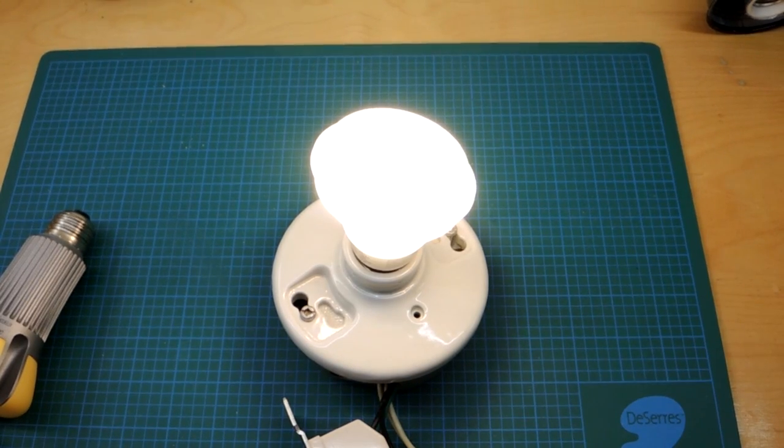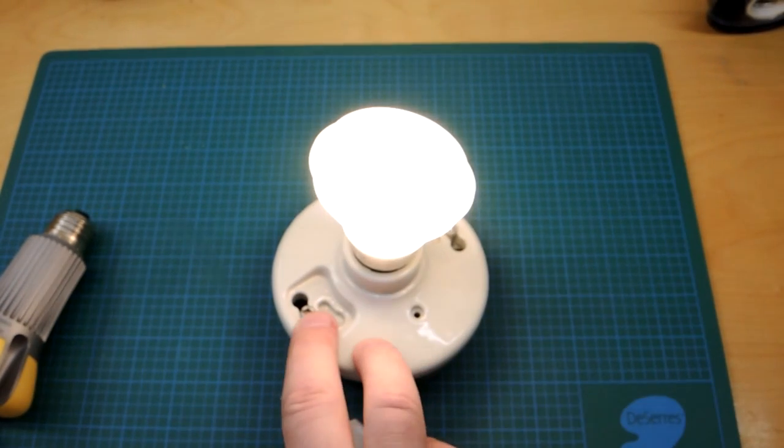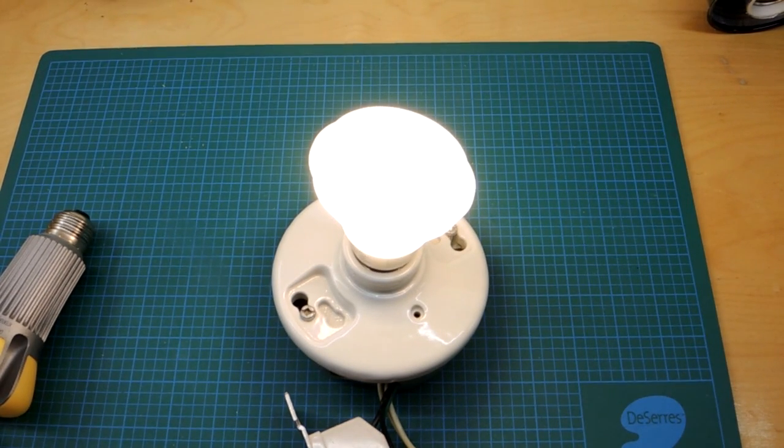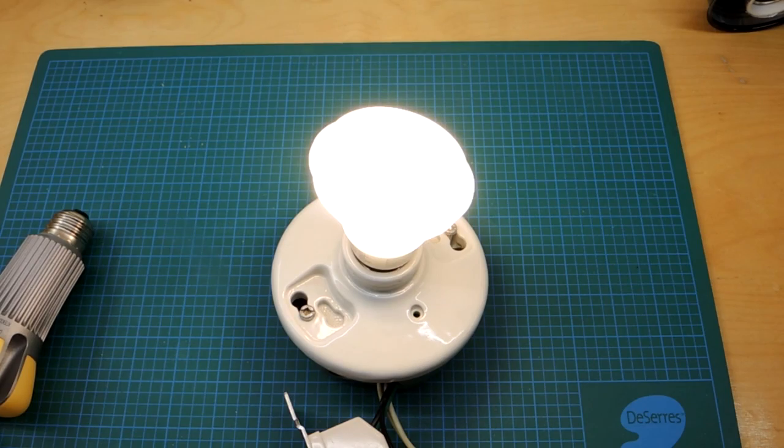So this is the 60 watt slim style. It also buzzes. In fact, this particular bulb buzzes much worse than the 75. I don't know if that's just because of luck of the draw or if they actually did improve the 75, but again, we'll zoom in and listen to it.